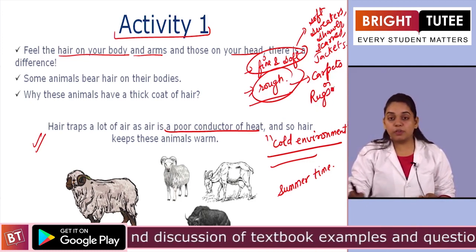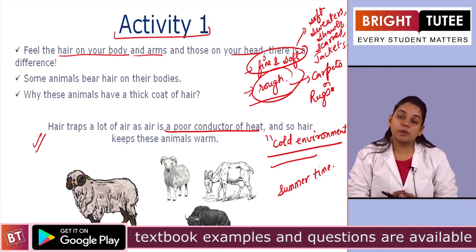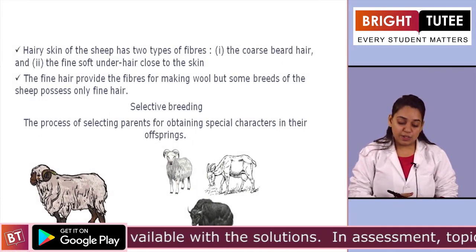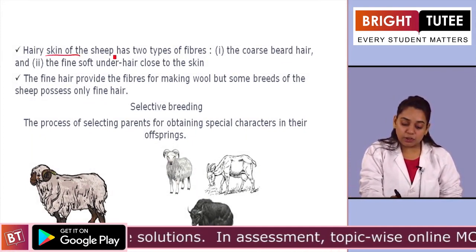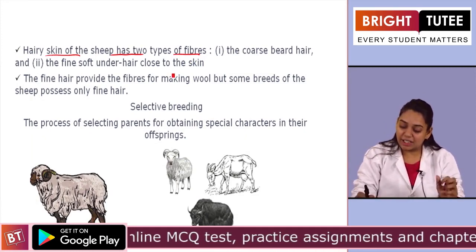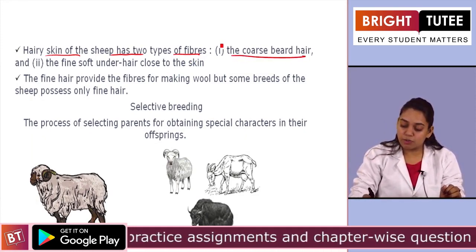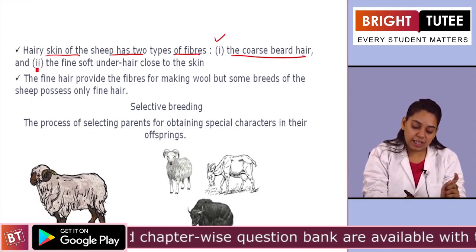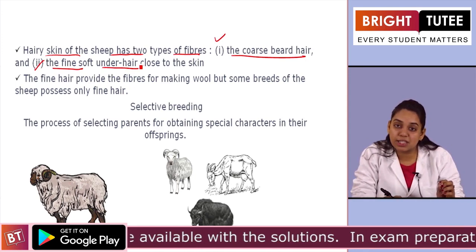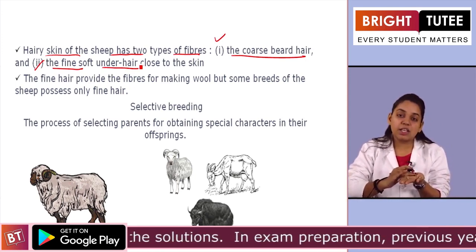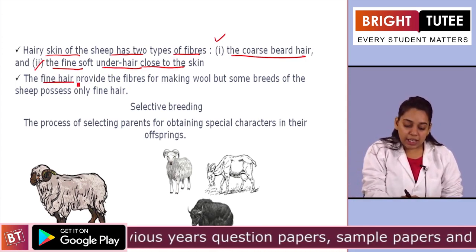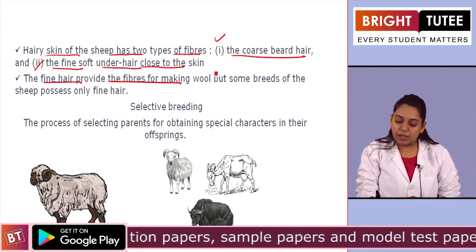Now we shall move ahead and study more about the animals which yield wool. The hairy skin of the sheep has two types of fibers — one is the coarse hair, and the second is the soft, fine under-hair close to their skin. This fine hair provides the fibers for making wool.